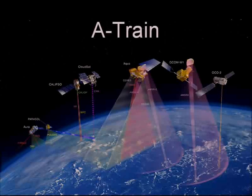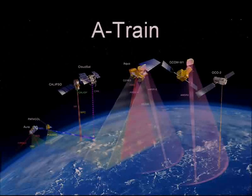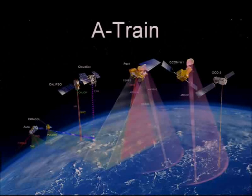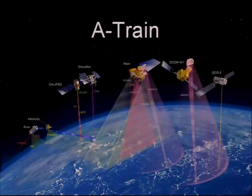About 450 miles above the Earth's surface is a formation of satellites in a polar orbit that takes them across the equator 14 times each day. They call that formation the A-train, and all of the members in the A-train are Earth-observing satellites, so they've got their instruments pointed downward instead of outward.